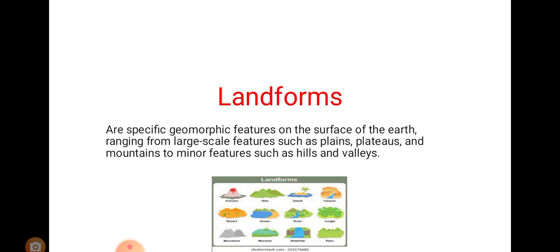A landform is a feature on the earth's surface, often with a recognizable shape like a valley or a mountain. They range in size and can be small like hills or much larger like mountains.